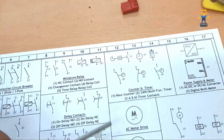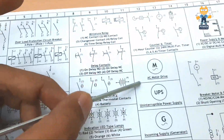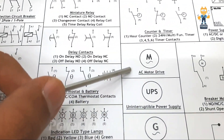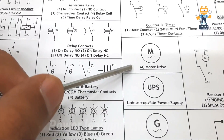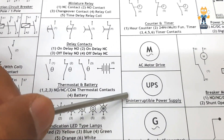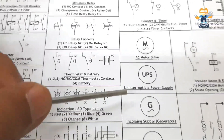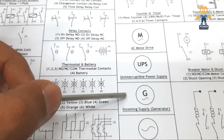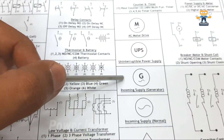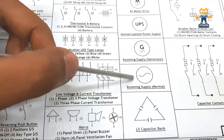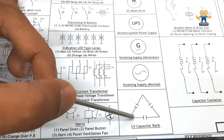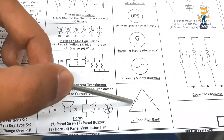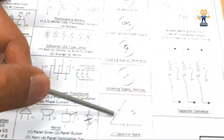This is a very common symbol — the AC motor drive. We also have the symbol for a UPS, and this is for a generator. If we have generator supply, this is incoming supply, normal supply, or transformer supply. Here we have an LV capacitor bank with the capacitors connected.